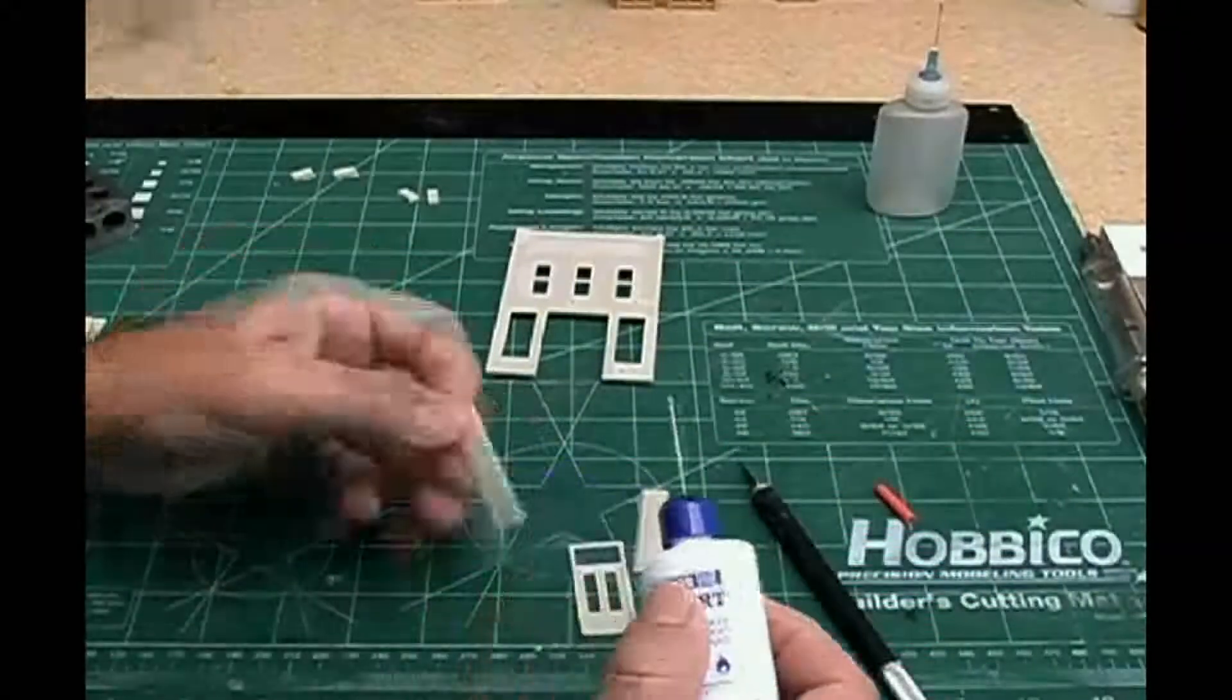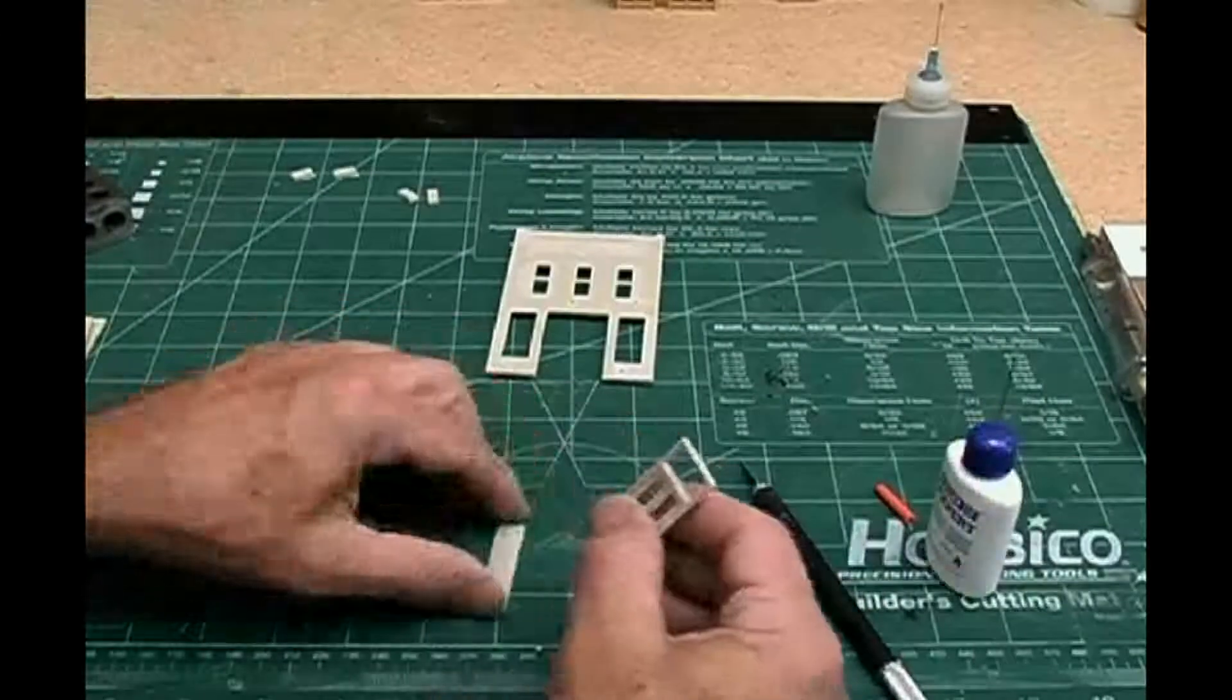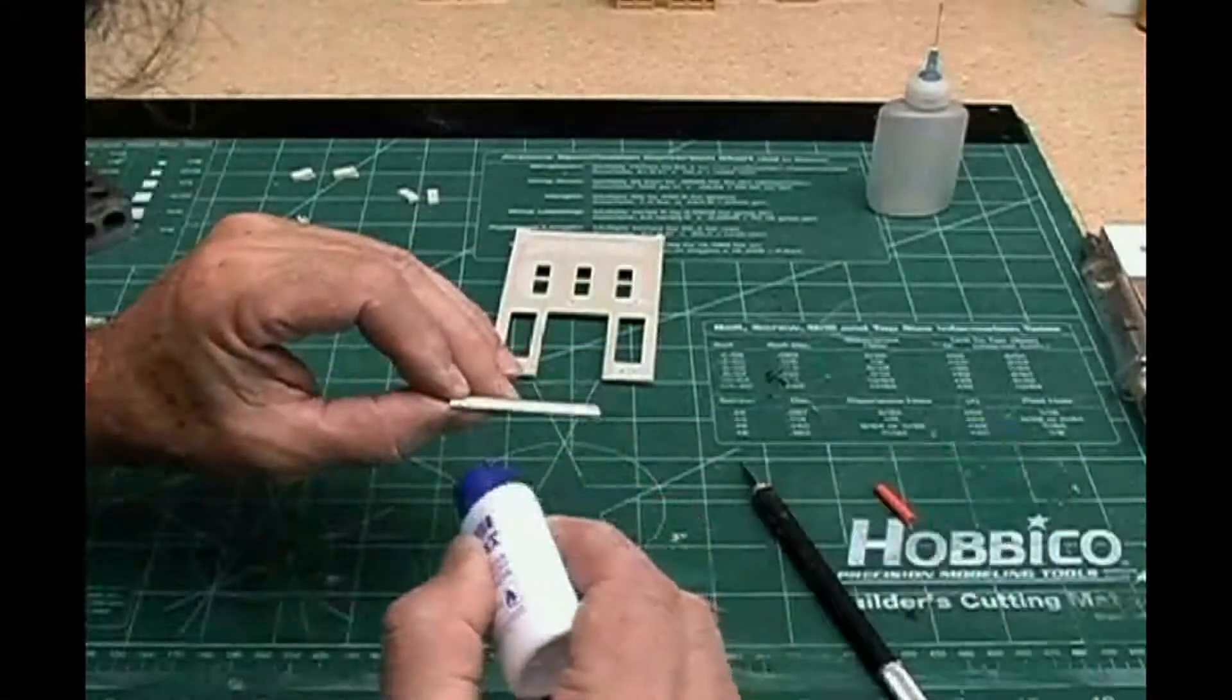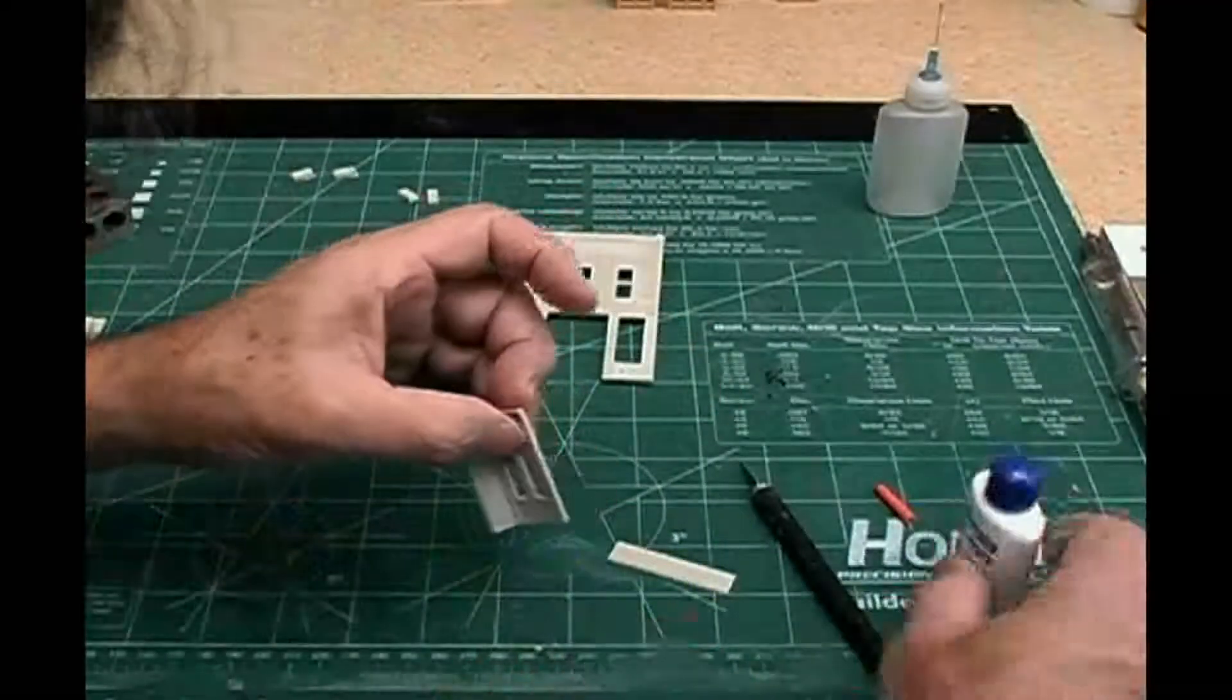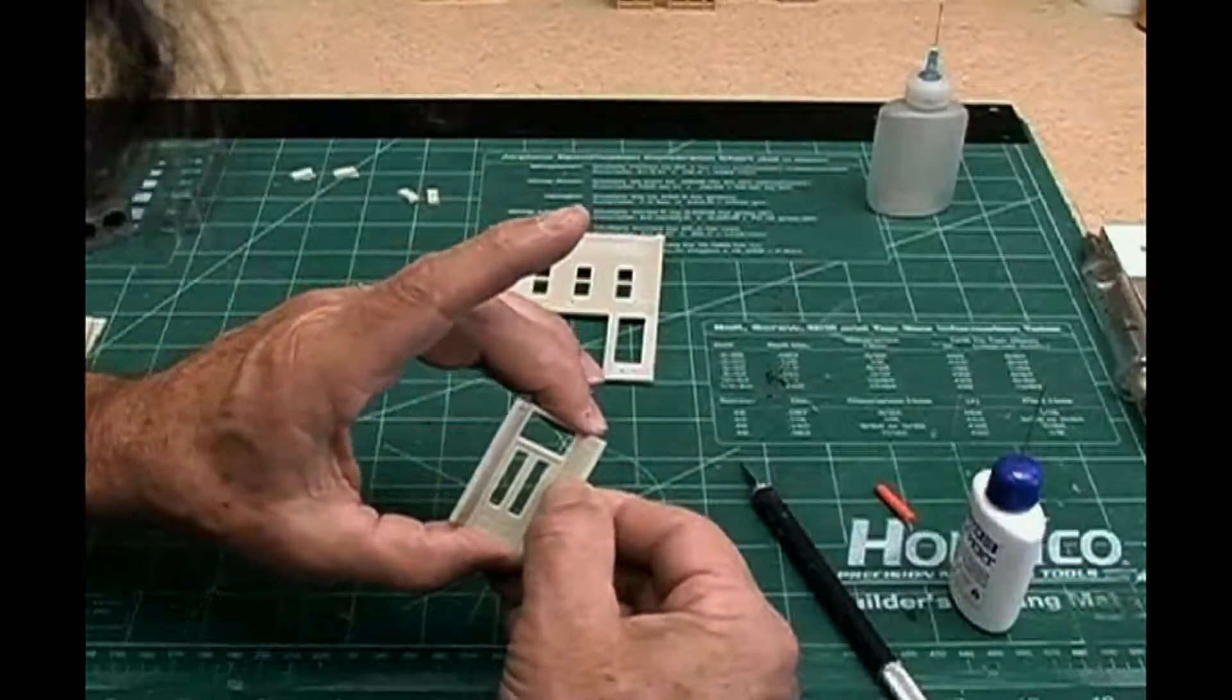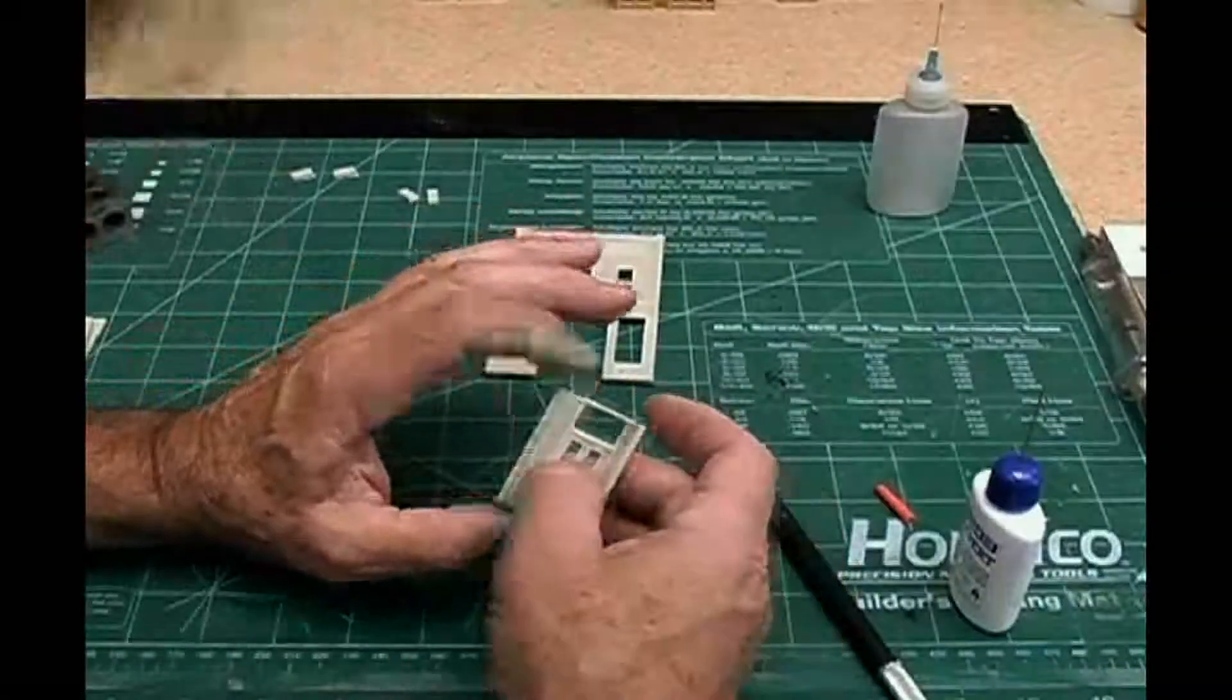Then we'll apply some glue to it, both sides, softens it a little bit better. And now we'll rub them just a little bit to kind of melt them together. The other side glued up, both sides, makes them melt together a little bit better. Just like that, that quickly. And the parts are stuck and ready to put onto the back wall.